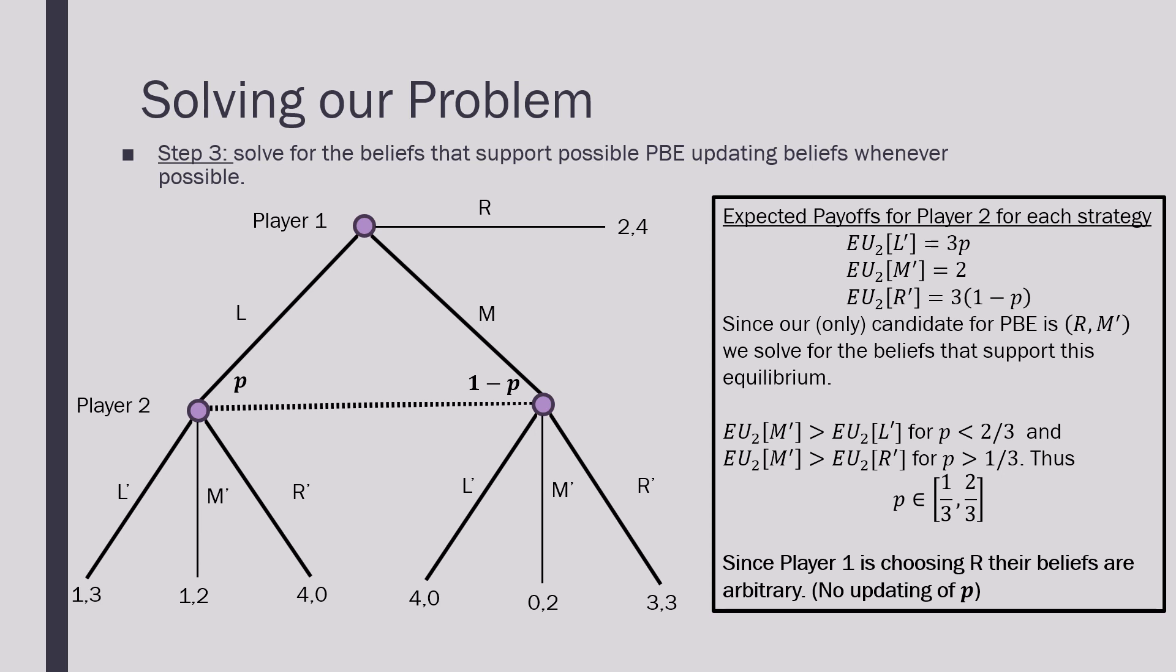Since Player 1 though is choosing right, their beliefs are going to be arbitrary. So there's going to be no updating of Player 2's p in this case, because Player 1 is just going to be playing right.